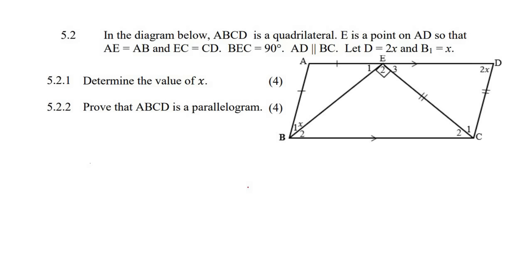In the diagram below, ABCD is a quadrilateral. E is a point on AD such that AE is the same as AB — so those two lengths are the same. And then EC is the same as CD, so those are the same. D is 2X, B1 is X. And then AD is parallel to BC, so these two lines are parallel.